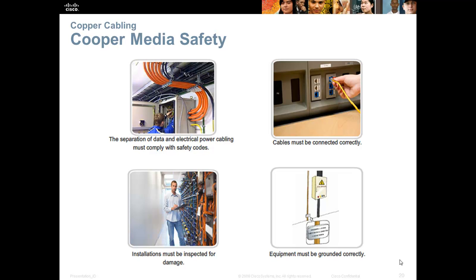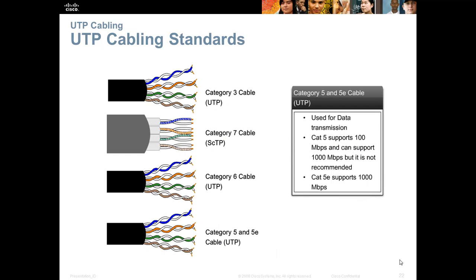With copper media, always ensure ends are terminated properly, equipment is grounded correctly, and installations are inspected for damage. Because copper cable transmits electricity, it does pose a safety risk. The speed of UTP depends on the cable category — the more twisting, the higher the category. In most current networks, you'll see category 5 or category 5e. Category 5 supports 100 megabits per second and can go up to a gigabit, though that is not recommended. Cat 5e does officially support gigabit speeds.